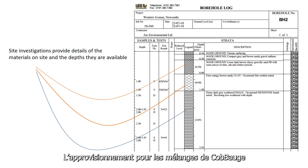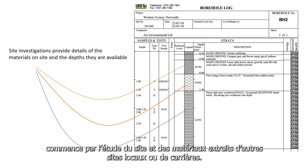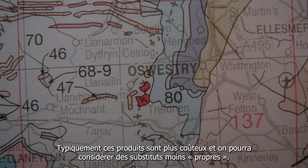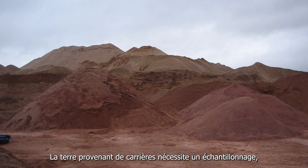Sourcing soils for mass and light earth mixes used in cob construction can start with site investigation, materials extracted from other sites locally, or quarries. It may also involve more familiar supply chains for things like sands and aggregates, although typically these will come at a higher price and substitutes using less clean materials may be considered. Soils from quarries also need sampling.